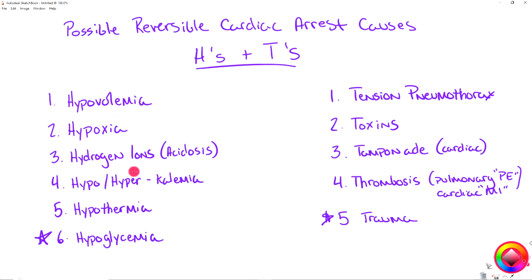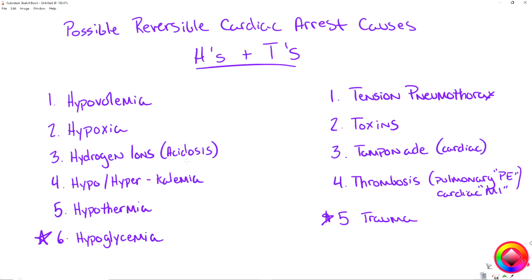Third is hydrogen ions, otherwise known as acidosis — a buildup of acid within the body. This could happen due to a long downtime via the actual cardiac arrest, or it could have happened pre-cardiac arrest and that is the reason they went down in the first place. Maybe they're a DKA or a septic patient that is very acidotic to begin with.